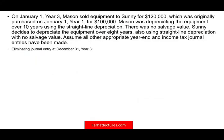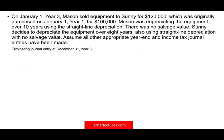Let's take a look at this simulation. This may not appear like a simulation to you, but on the exam the only difference you might see is boxes to input the account, the debit, and the credit. On January 1st, year 3, Mason sold equipment to Sunny for $120,000, which originally had a purchase on January 1st, year 1, for $100,000. Mason was depreciating the equipment using 10-year straight-line depreciation with no salvage value. Sunny decides to depreciate the equipment over 8 years, also using straight-line. Prepare the eliminating entries for year 3.